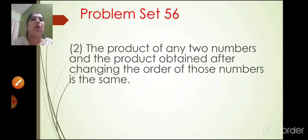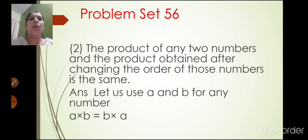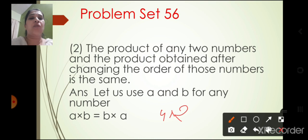The second one: the product of any two numbers and the product obtained after changing the order of those numbers is the same. Product means multiplication. Let us use A and B for any numbers. Then A into B is equal to B into A. For example, taking A as 4 and B as 2: 4 twos are 8, and 2 fours are also 8. So 8 is equal to 8.